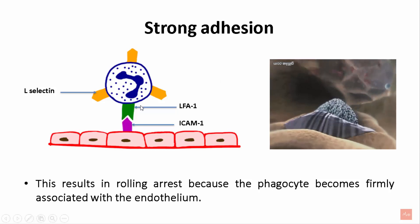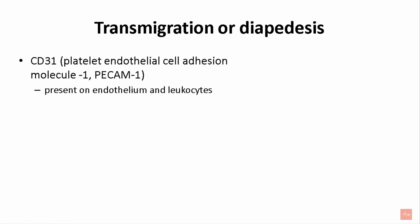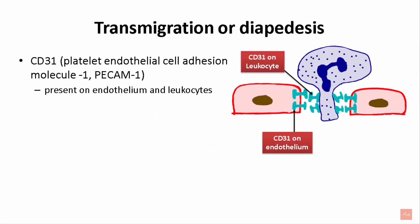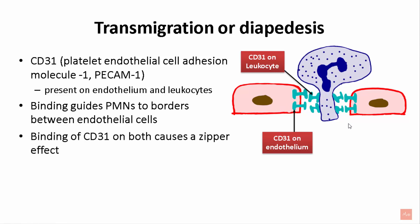The leukocyte function-associated antigen comes in contact with intercellular adhesion molecule 1 present on the endothelial cells, resulting in rolling arrest, as seen in this image. Coming to transmigration or diapedesis: there are CD31 molecules, also called platelet endothelial cell adhesion molecules or PECAMs, present both on the endothelium and on the leukocytes. The CD31 molecules on the leukocyte come in contact with the CD31 molecule on the endothelium, guiding the PMNs to the borders between the endothelial cells.